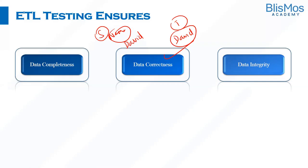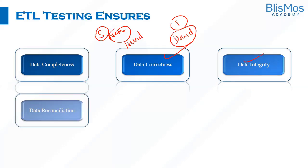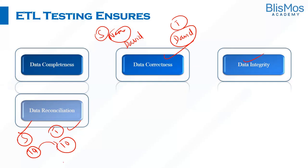Data integrity is a very important aspect of the data warehouse, and ETL testing ensures data integrity is taken care of. Data integrity is a measurement which users consider when analyzing the value and reliability of the data. ETL testing also ensures data reconciliation is handled appropriately as per the business requirements — for example, if the source has 10 records, the target should also have 10 records, and ETL testing ensures those 10 records are moved from source to target.